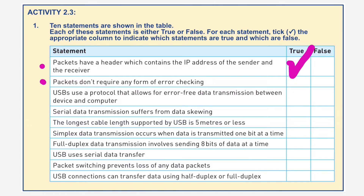Packets don't require any form of error checking. Well, that's false. In a previous video, we looked at how a packet of data containing binary information — ones and zeros — has an error checking method involving counting all the ones and turning those ones into an X value. This is then compared at the receiving end where they check the X value against the number of ones in the packet. So yes, that is false.